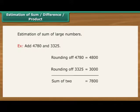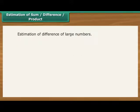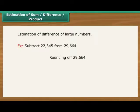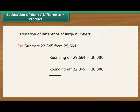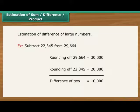Estimation to nearest number can help in the estimation of the difference of two large numbers. For example, subtract 22,345 from 29,664. Rounding of 29,664 would make it 30,000. Rounding of 22,345 would make it 20,000. Difference of two is equal to 10,000.